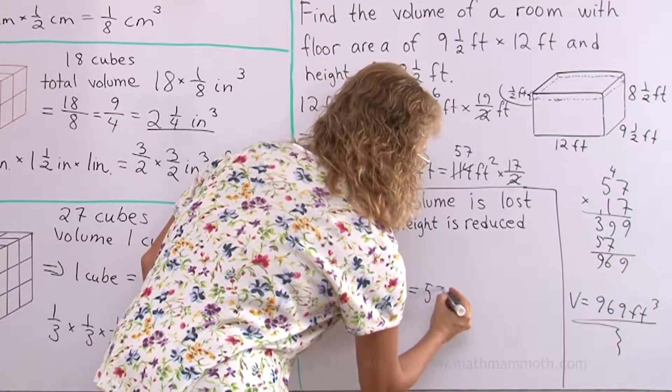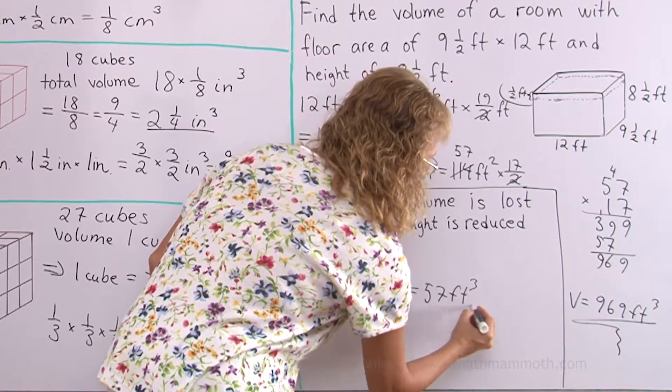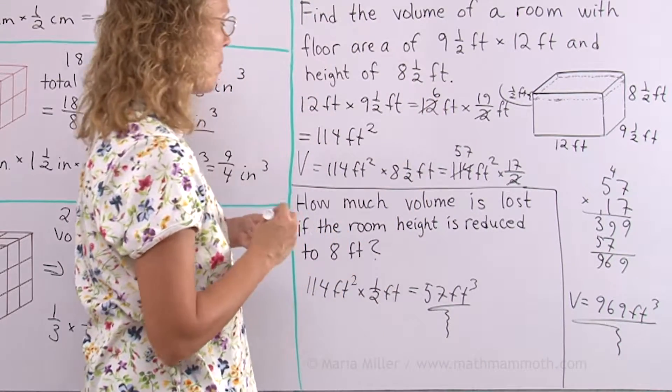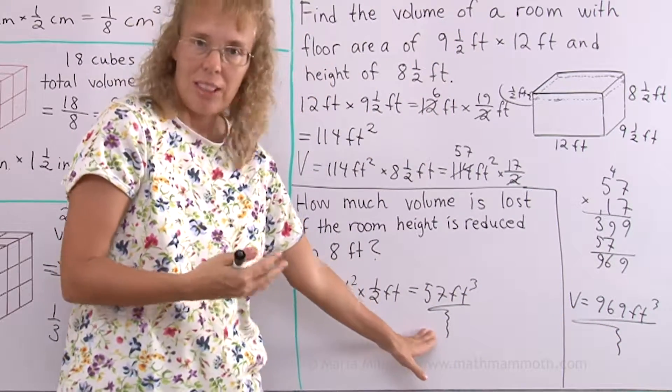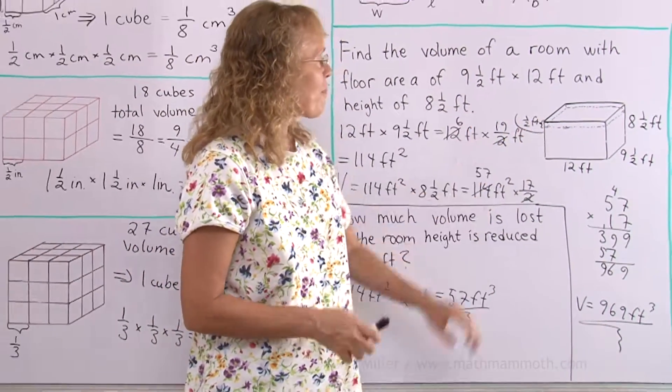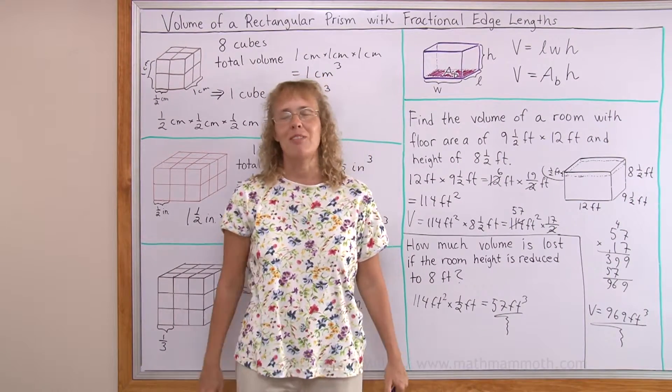So that is 57. And the answer is again in cubic feet. That's how much the volume would be reduced. And the new volume, of course, would be that number minus 57 cubic feet. Alright. We are all done with this. And I hope this was helpful.